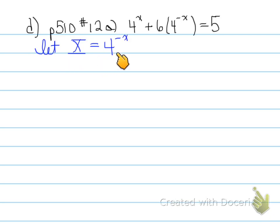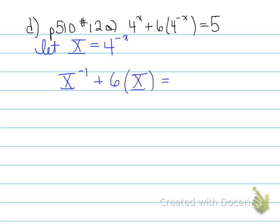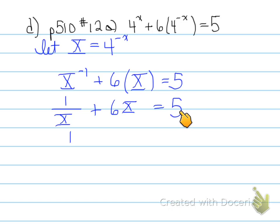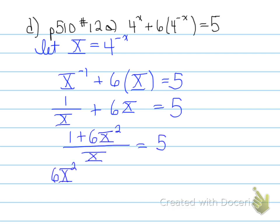We let u equal 4^(−x). Replacing 4^x with u^(−1) gives us u^(−1) plus 6u equals 5. Rewriting u^(−1) as 1/u: we have 1/u plus 6u equals 5. To handle the fraction, we make everything a common denominator, moving everything to the left so we have a single fraction over u equal to 0.